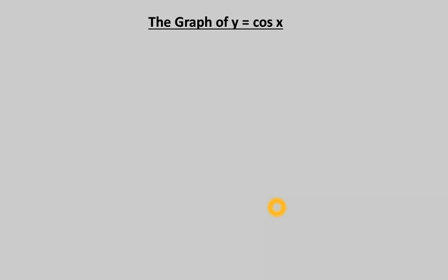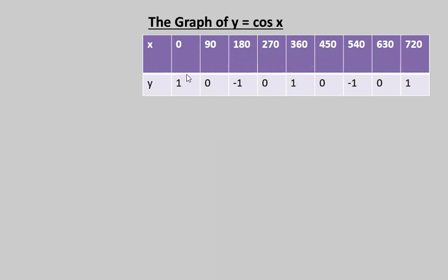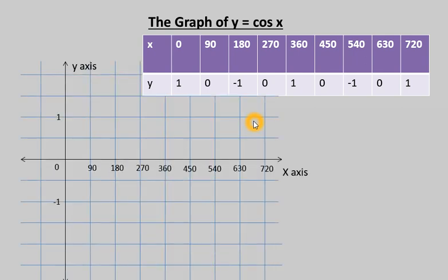For today's topic: the graph of y = cos x. I am using values for x at multiples of 90 — that is 0, 90, 180, 270. You can use a calculator to find the corresponding values of y. For example, cos 0 = 1, cos 90 = 0, cos 180 = -1. On the x-axis, 1 cm represents 90 degrees, and on the y-axis, 2 cm represents 1 unit.